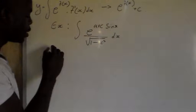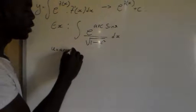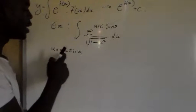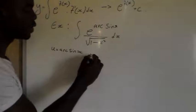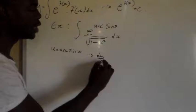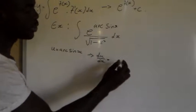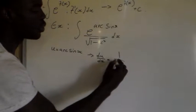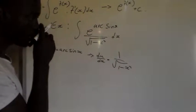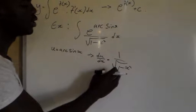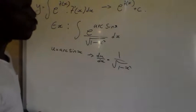If we say u is equal to arcsin x, then we find the derivative: du over dx will be equal to 1 over the square root of 1 minus x squared. The derivative of arcsin x is a standard result that is there in your formula sheet.